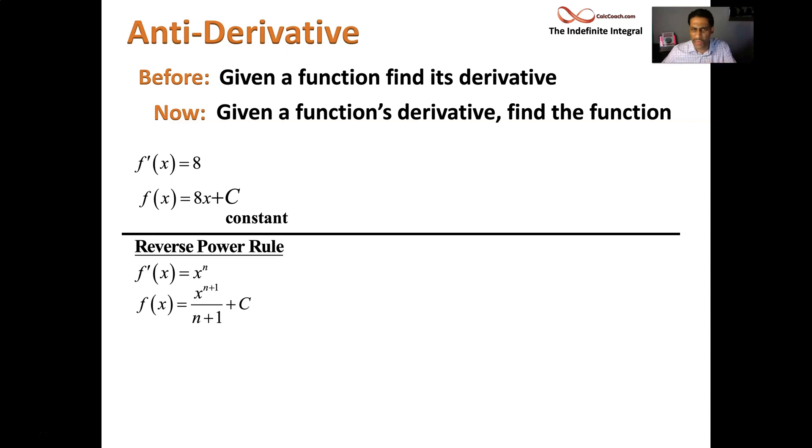And all of these, we'll put a plus c because adding a constant won't change anything. Okay. This is all good unless n is equal to negative 1, then we have a problem. But we've seen what to do with that. Well, we will see. All right.